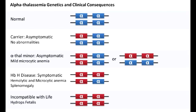What happens in case of 3-alpha-globin gene deletion? In case of 3-alpha-globin gene deletion, this results in a condition called hemoglobin H disease.